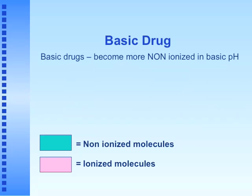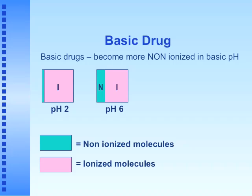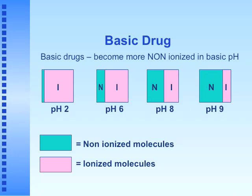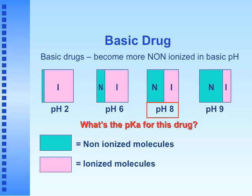For a basic drug — these become more non-ionized at basic pH. If I put a basic drug into an acidic environment, about 99% is ionized. In a near-neutral environment, about 75% is still ionized. At pH 8, there's a 50-50 split. A little more basic, 75% is non-ionized and 25% is ionized. So the pKa for this basic drug is 8 — that's the pH at which there is a 50-50 ratio.